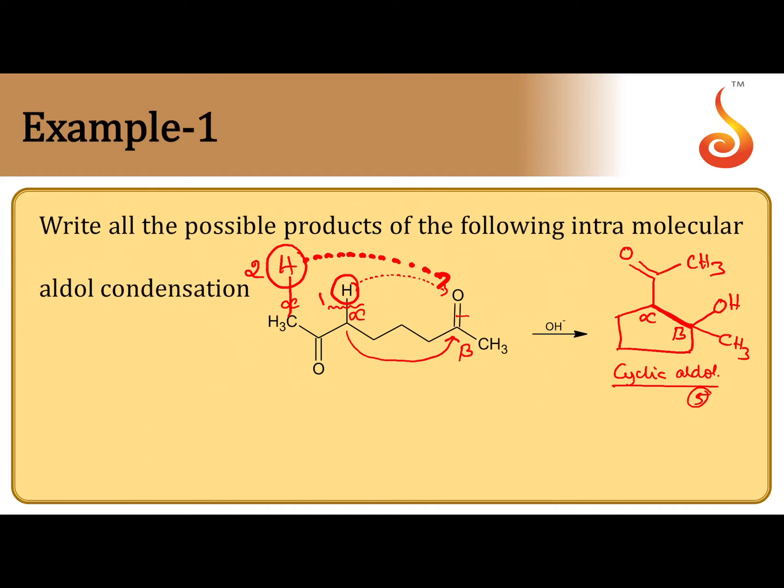we can get 7-membered ring. You count from left side alpha carbon to beta carbon. One, two, three, four, five, six, seven. So 7-membered ring is formed. You draw 7-membered ring like this.